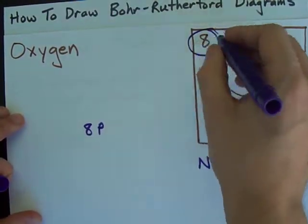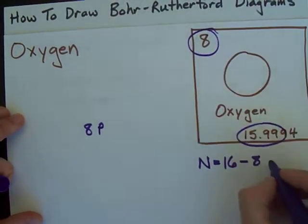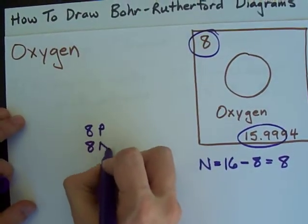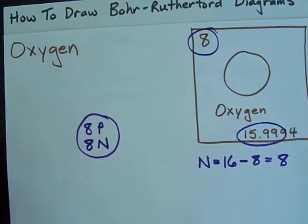And I have to take away however many protons I had, which in this case was 8. 16 minus 8 gives me 8, and there also happen to be 8 neutrons in an oxygen atom. Put a little circle around it, that's your nucleus.